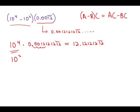Now separately we'll figure out 10 to the second times this decimal. Again I'll write out some terms here. Multiplying by 10 to the second means move the decimal place two places to the right, and so we'd wind up with 0.121212..., that whole thing going on forever.